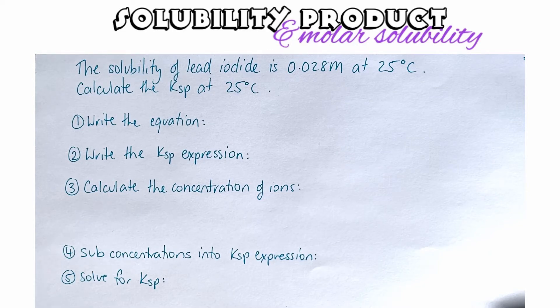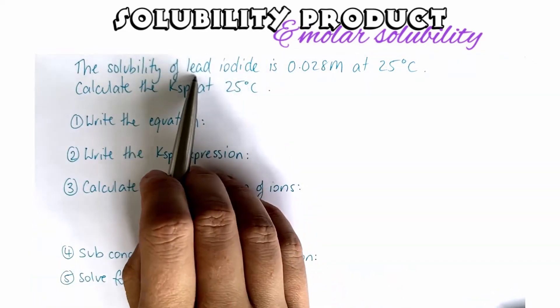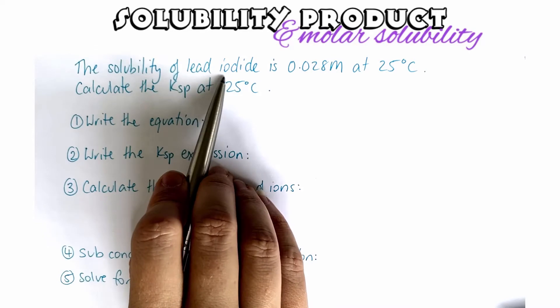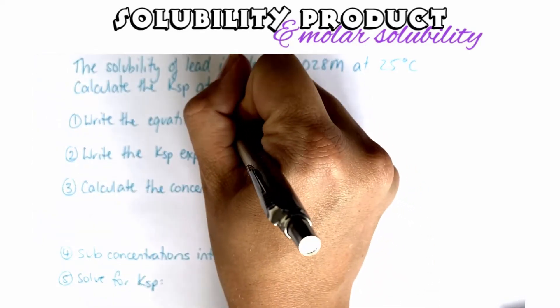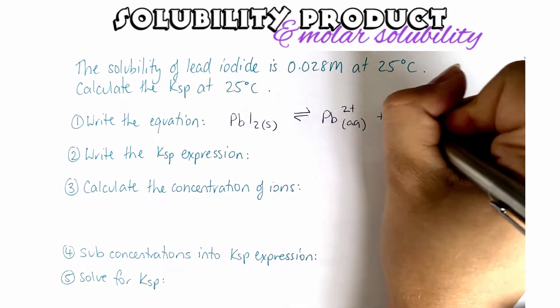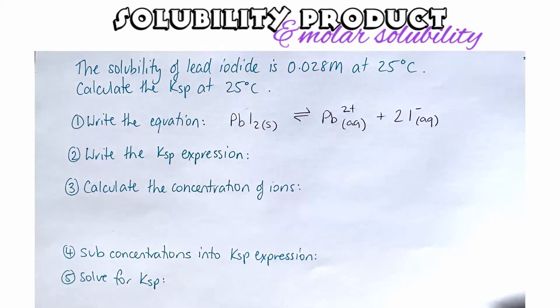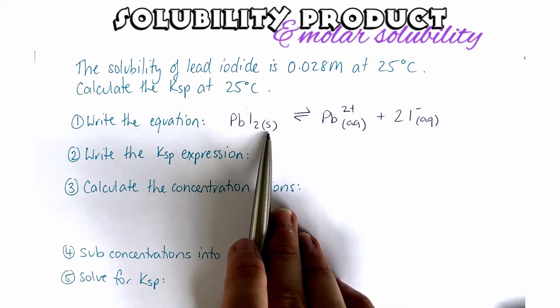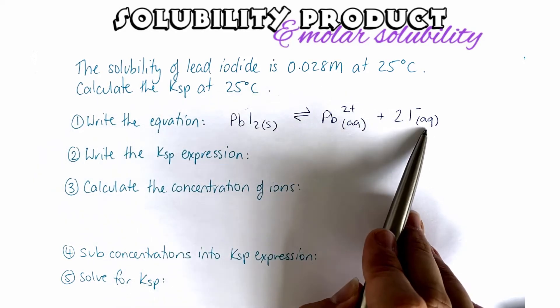Our first step is to write out the equation. For this particular example, we're looking at solubility, so that means we're looking at the dissociation of lead iodide. Make sure that your equation is balanced and also make sure that your equation has each of the states of matter.